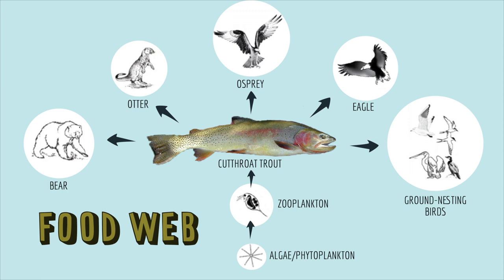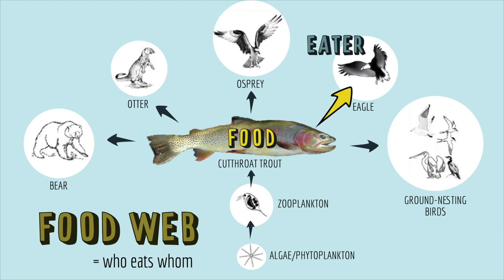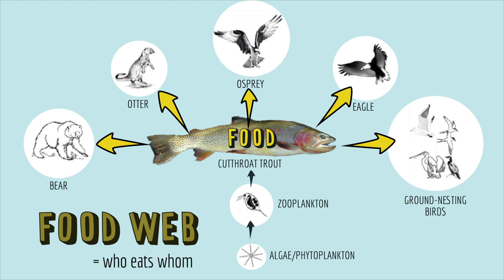Consider this food web from Yellowstone National Park. A food web is a diagram that depicts who eats whom in an ecosystem. The arrows point from the food to the eater, so this food web shows that bears and otters, osprey and eagles, and various ground-nesting birds all like to eat cutthroat trout.